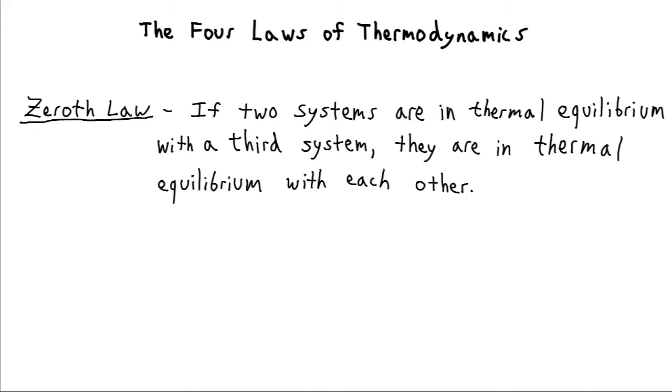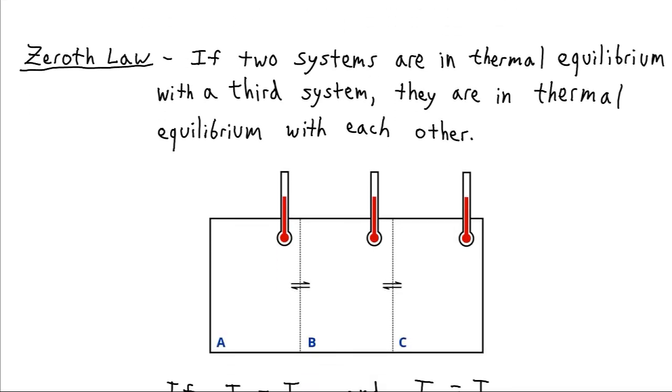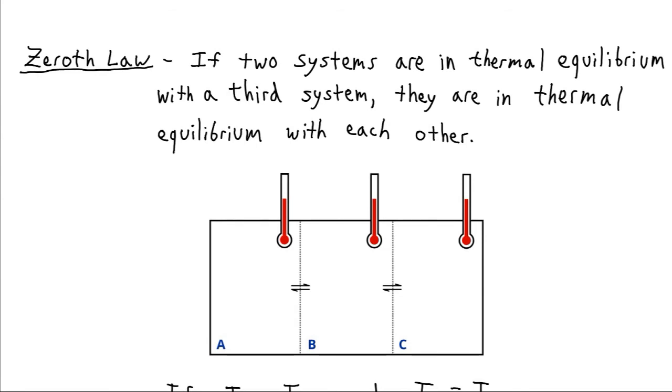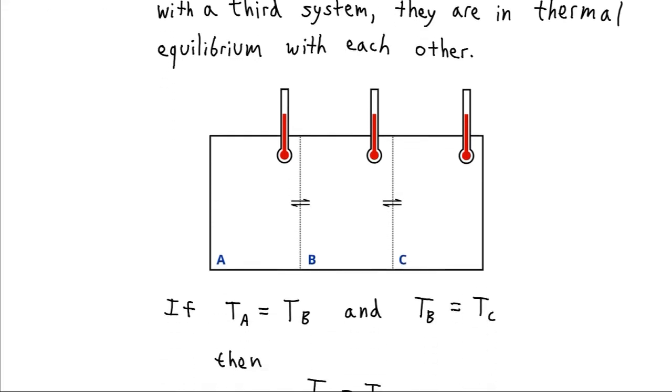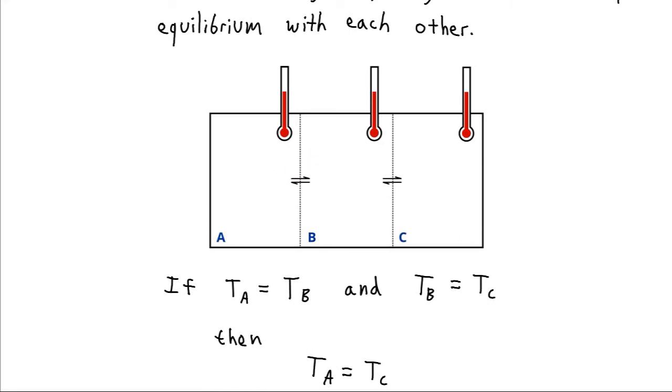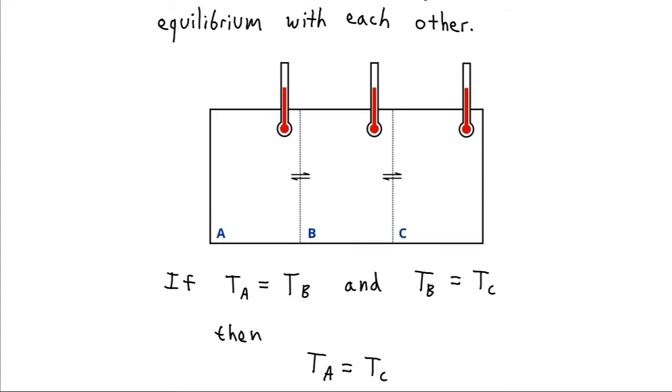What the zeroth law says is that if we have two systems and they're in thermal equilibrium of a third system, then they're also in equilibrium with each other. To give you a picture of that, here we might have systems A, B, and C. If A and B are freely able to exchange heat and so they're in equilibrium, and B and C are freely able to exchange heat until they come to equilibrium, then A is going to come into equilibrium with C, which means that A and C are going to have the same temperature. It might seem obvious, but it's an important part of thermodynamics.